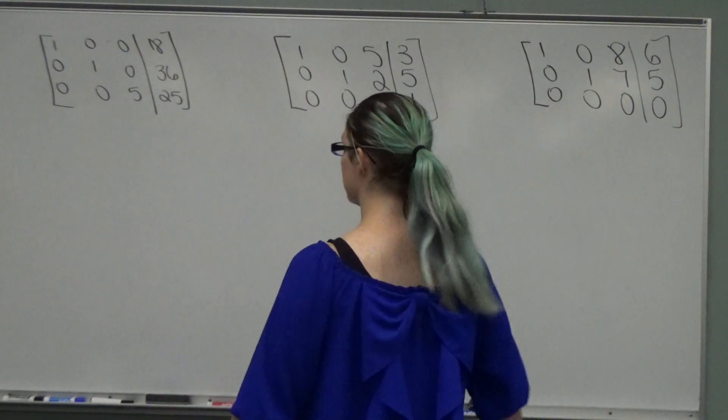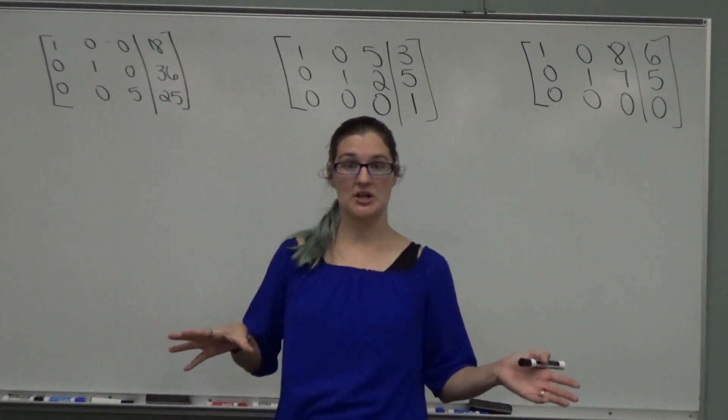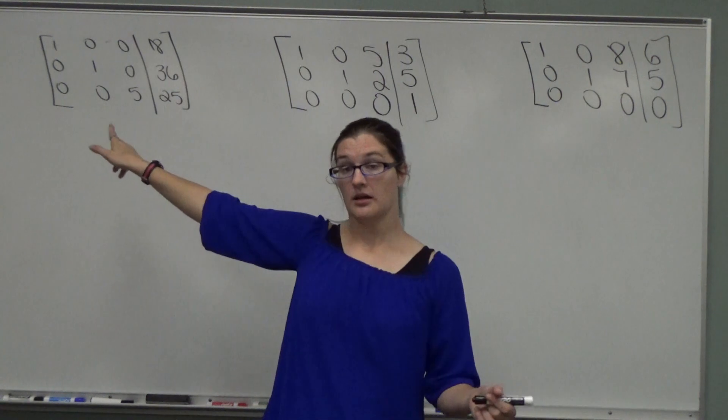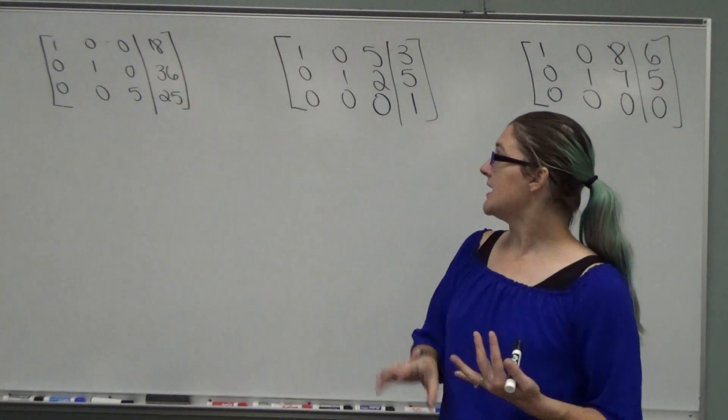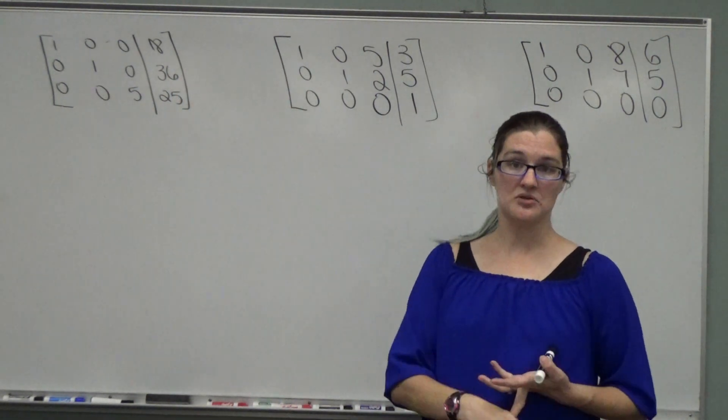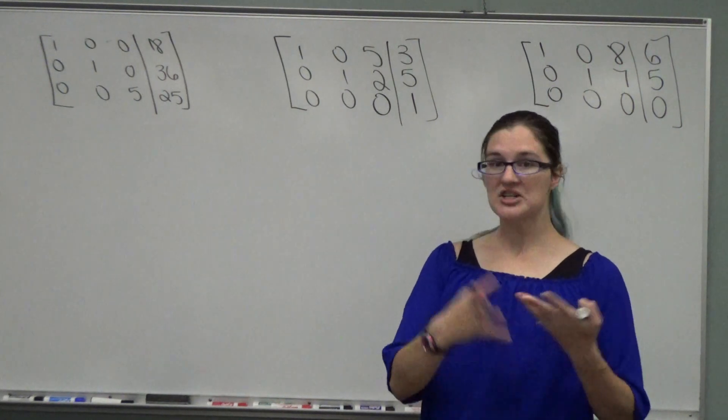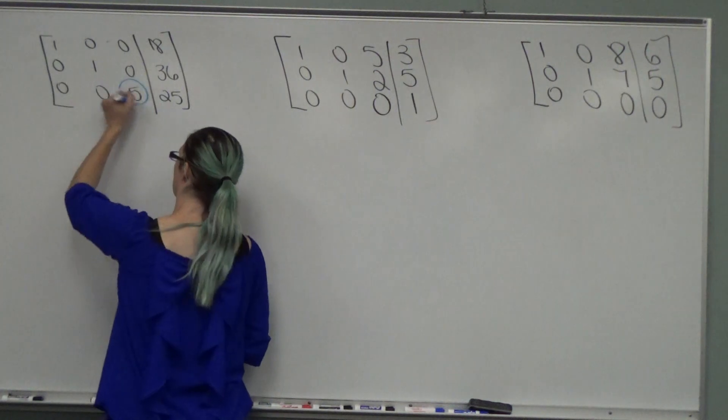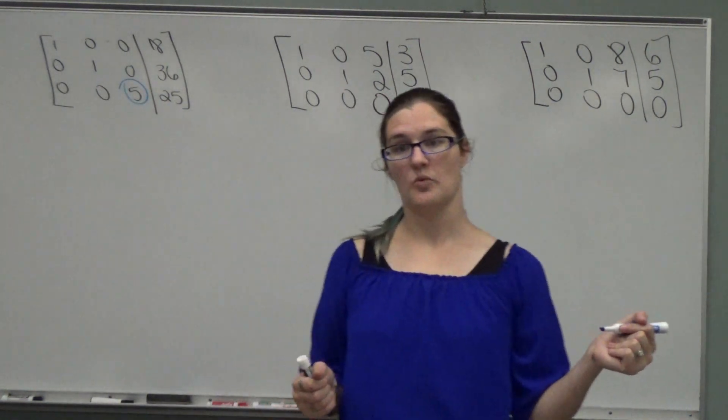So I have three matrices behind me. Each one is a separate question. So we're going to start with this one. The trick to this question is a lot of people will answer x equals 18, y equals 36, and z equals 25.